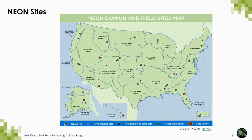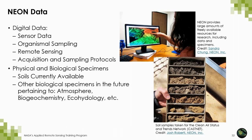The NEON program has established a network of 20 core sites selected to characterize wildland environments over the 30-year lifetime of the observatory. Additional relocatable sites are designed to move multiple times during the lifetime of the observatory and are selected to gather data that enables investigations of specific research areas such as climate gradients or dust transport. The core sites also act as reference points to study the effects of human-driven changes across the 30 years. There are a total of 81 aquatic and terrestrial field sites over these 20 ecosystems.